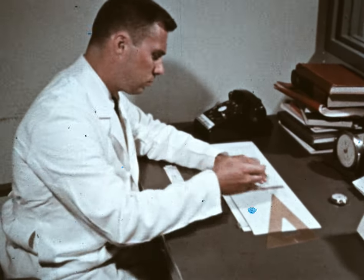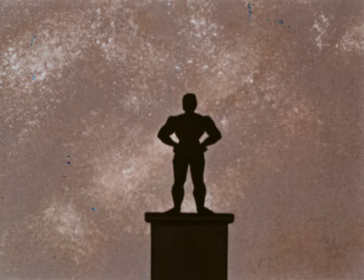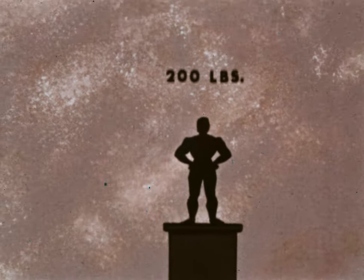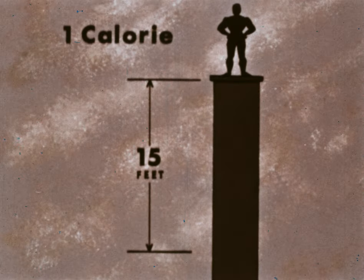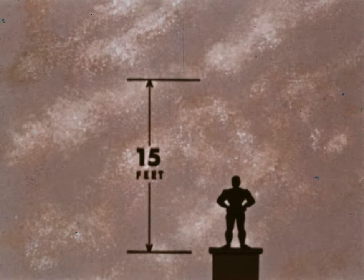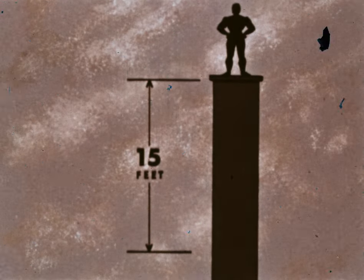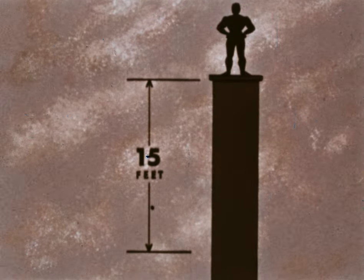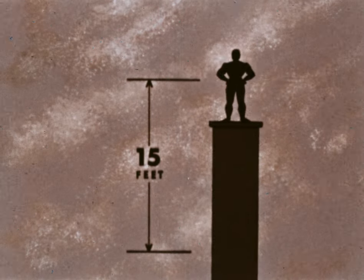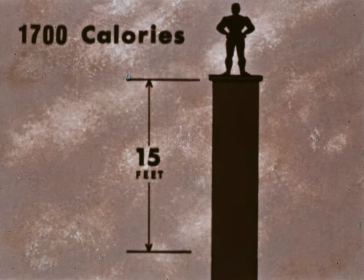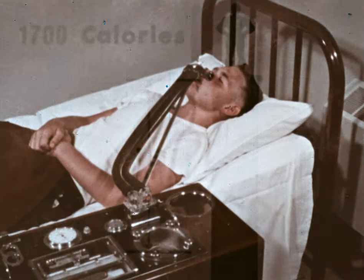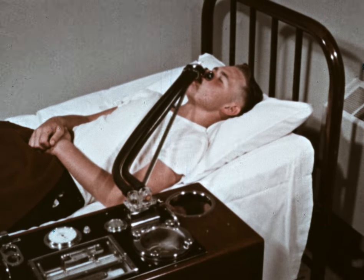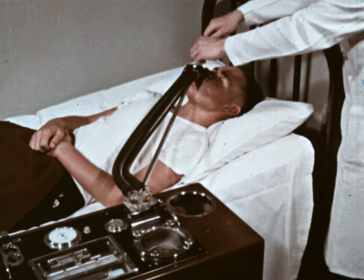To understand this unit, let's take this example. A man weighs 200 pounds. The amount of energy required to raise him 15 feet is about the amount of energy in one calorie. The adult human body generally produces every day a minimum of energy to raise this man 1,700 times. This amount of 1,700 calories is a minimum required to maintain the adult body properly even when at rest. This amount may be less for boys and still less for girls.